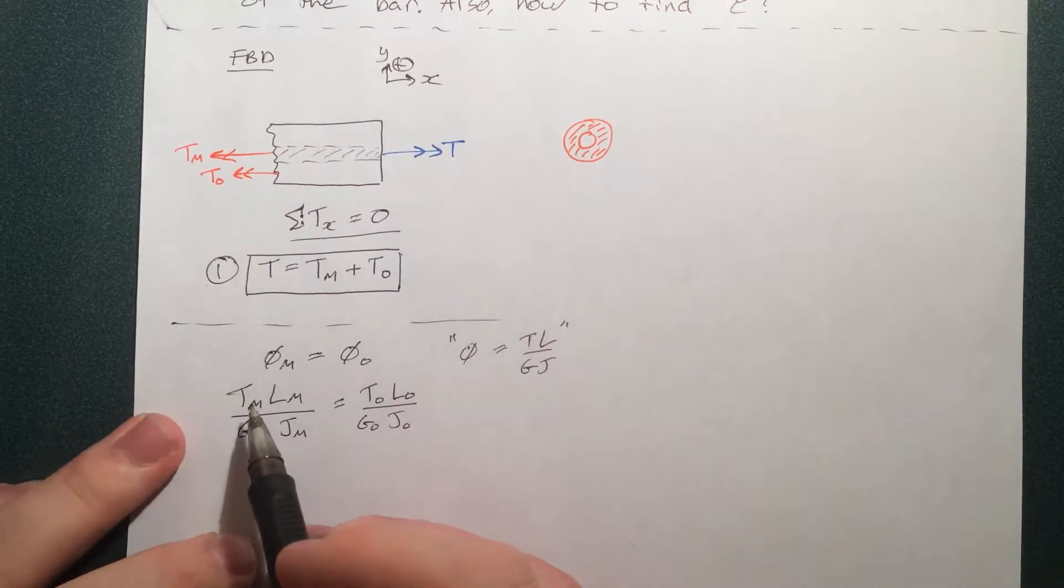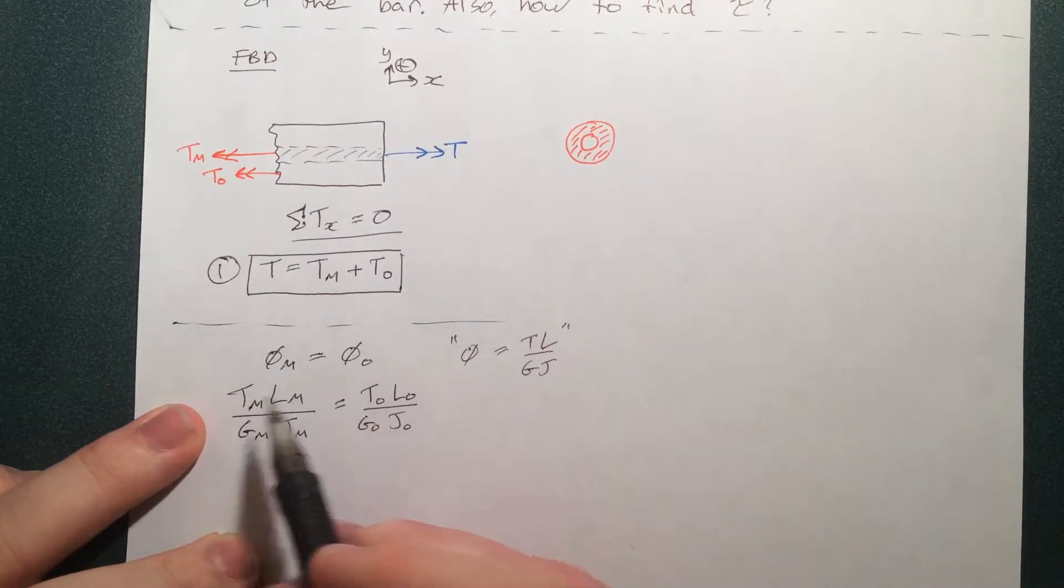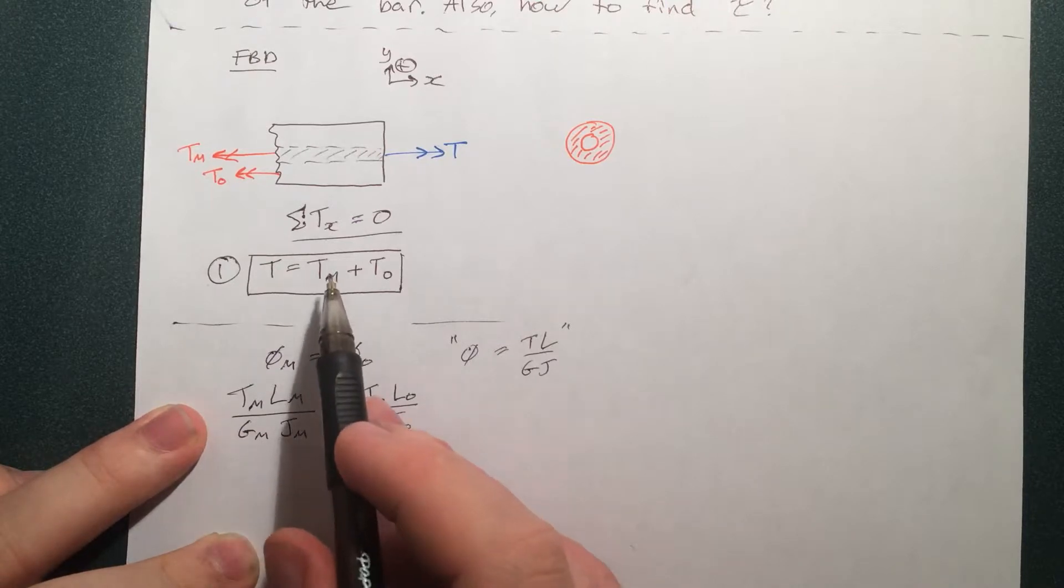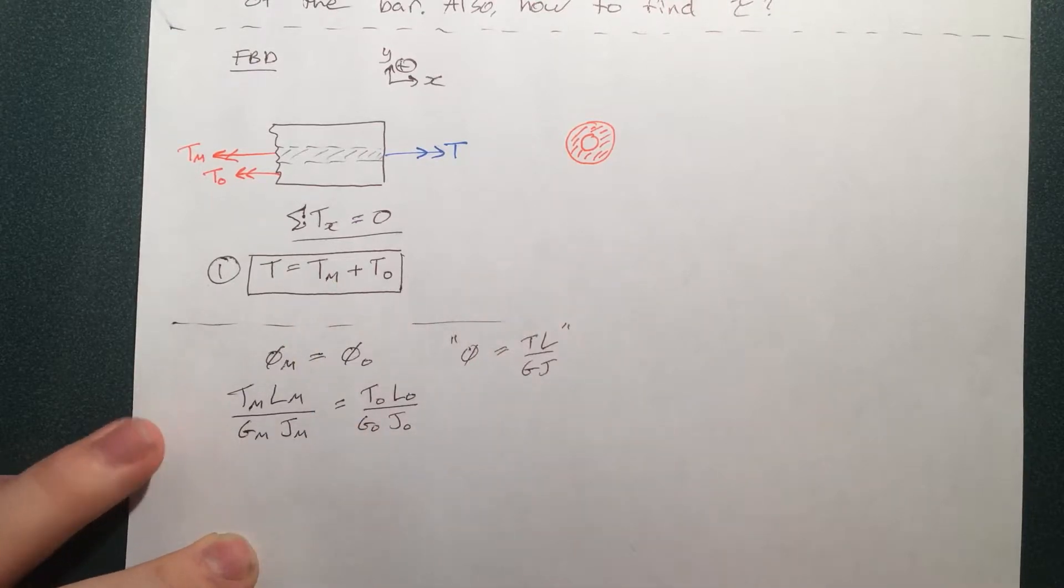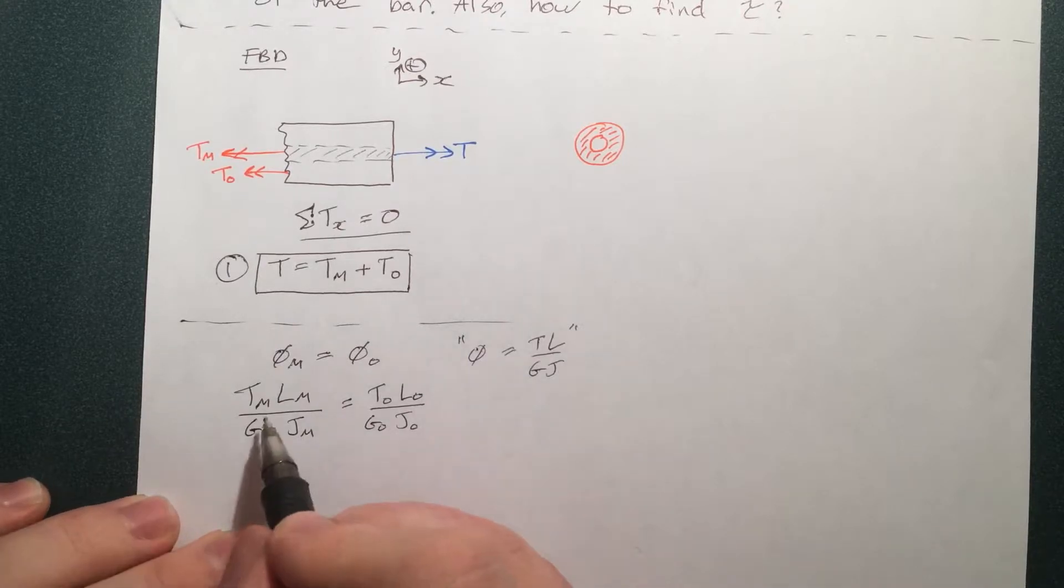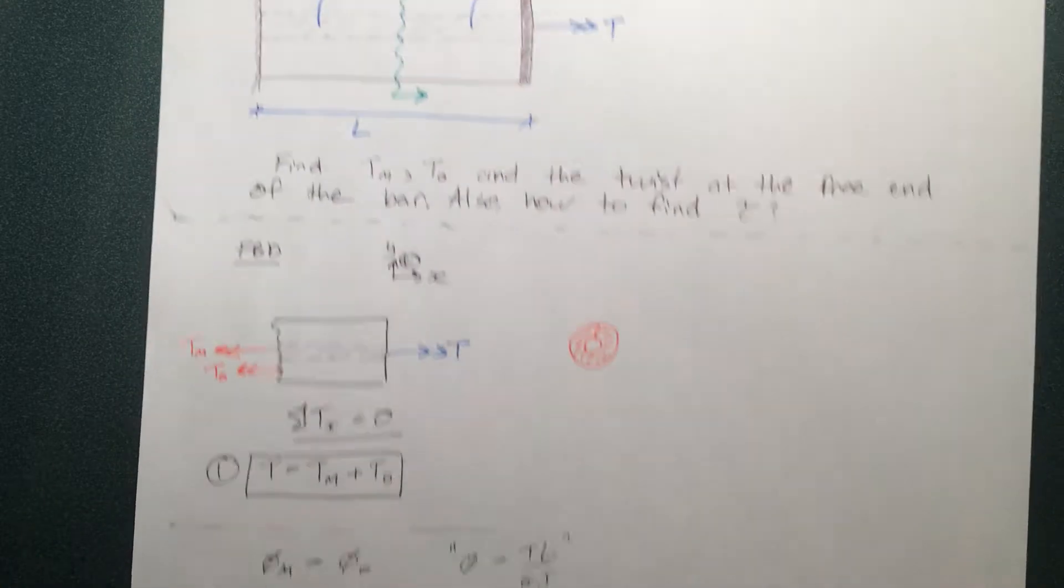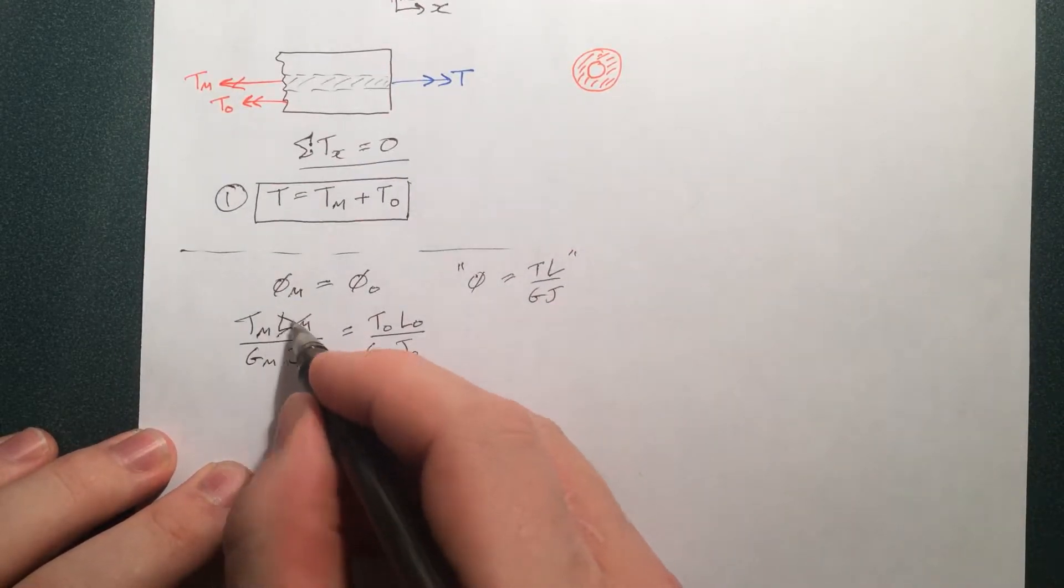And here's our second equation, T_M, T outside, and everything else we know. And in our case, the length is the same for both. So we can just cross these out.